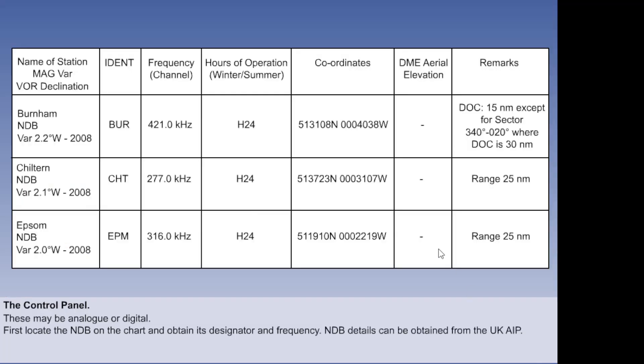A complete list of NDBs is held by each country's Civil Aviation Authority. Here is an extract from the Enroute section of the United Kingdom Aeronautical Information Package, the AIP.